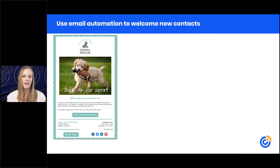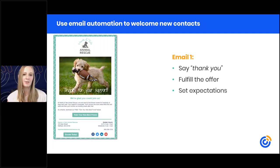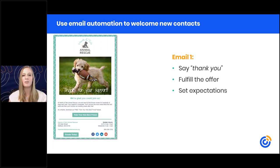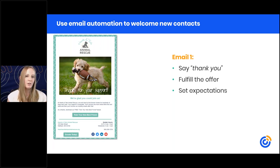Once you've gotten your contacts and are growing your list, start communicating with them via email — and some of those emails you'll want to automate. First and foremost, create a welcome series of emails that start sending and begin your relationship on the right foot. We recommend a series of two emails. Email one is where you say thank you for signing up. On your forms you enticed people to sign up with a value offer — fulfill that right within this email. Also set their expectations: when you'll be sending, how often, and what information they'll receive.